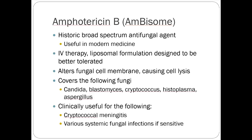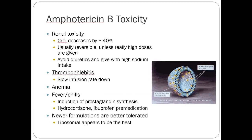Amphotericin B is an old but broad-spectrum antifungal. It was historically very toxic — nicknamed 'amphoterrible B' because it destroyed kidneys. The newer liposomal formulation is more renally tolerable, though still has some renal toxicity. It's very effective and covers pretty much all types of fungi. Clinically used for cryptococcal meningitis (associated with advanced HIV) and other systemic fungal infections.